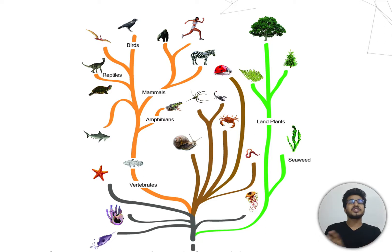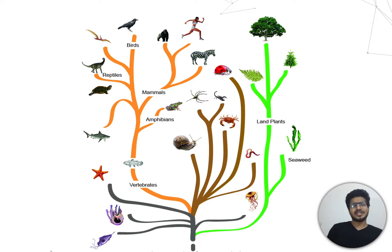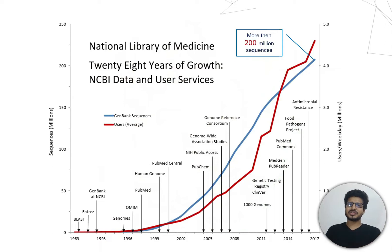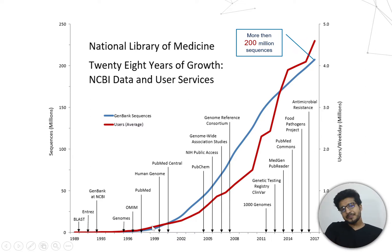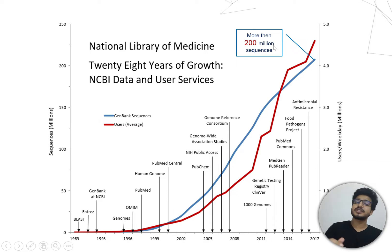We have seen a lot of human genome sequences developed in the past few years, and a lot of the technology is getting developed. In the last 10 to 17 years, we have seen 200 million genomes sequenced, which means a 20% growth rate. That is a huge amount of data.